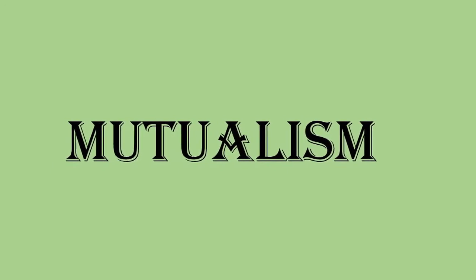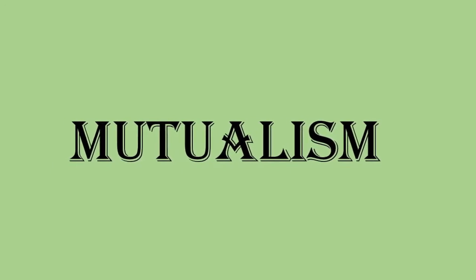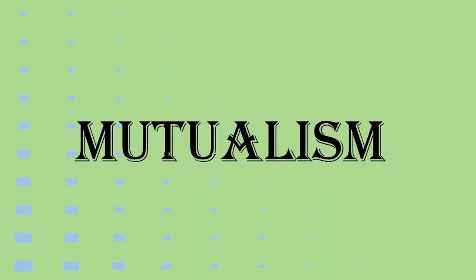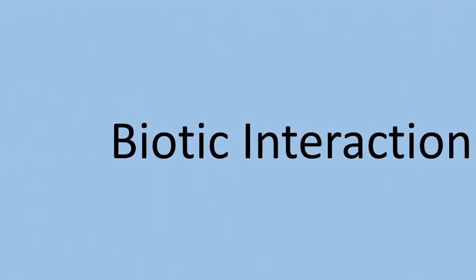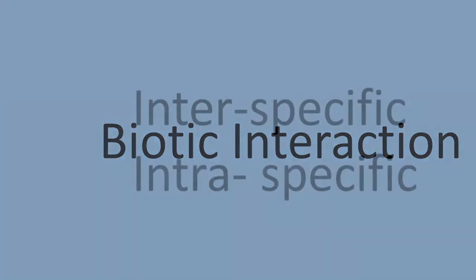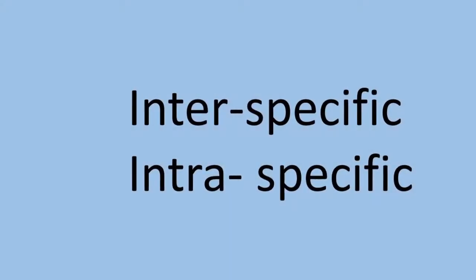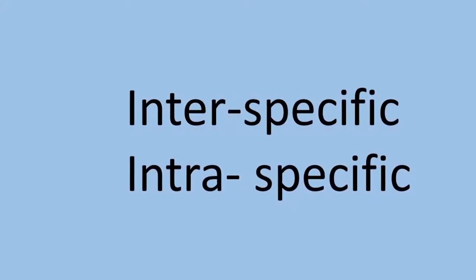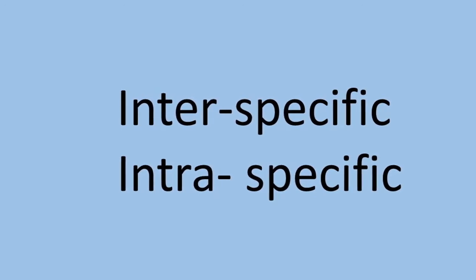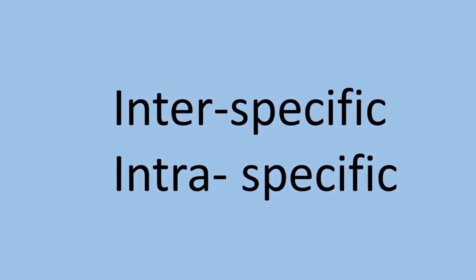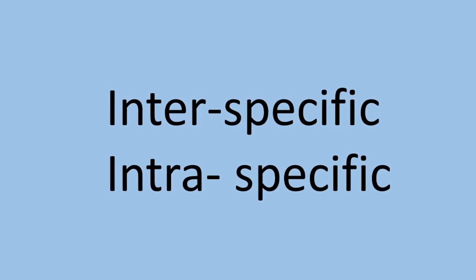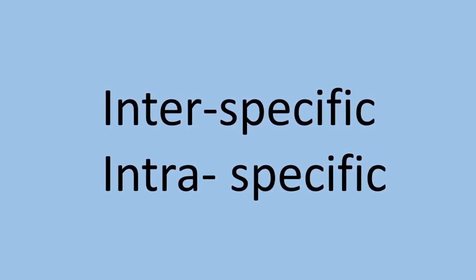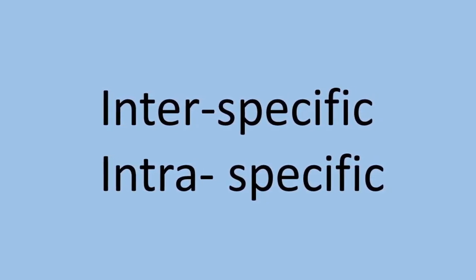We all know that the earth functions on the basis of interaction among abiotic and biotic factors. Even among the organisms, different types of interactions take place. These interactions can be intraspecific, that is, among the same species, or interspecific, that is, between different species. Let us now see about one such interaction: mutualism.